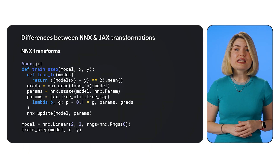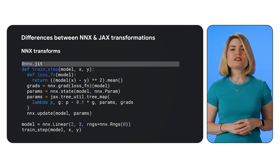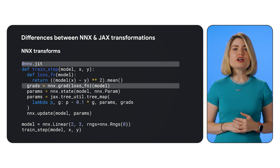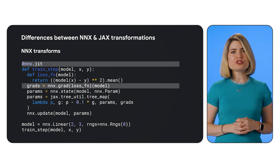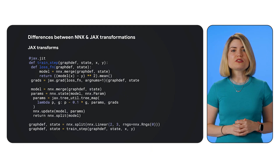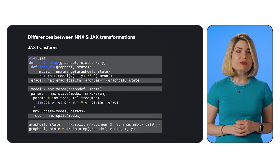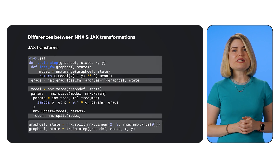Now, let's talk about transformations. Both NNX and JAX offer powerful transformations like JIT for just-in-time compilation and GRAD for automatic differentiation. But there's a key difference: NNX transformations can handle functions with NNX graph objects like modules and optimizers as arguments, even if they have mutable states. This means you can use NNX to transform functions that aren't pure and have side effects.